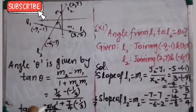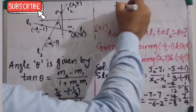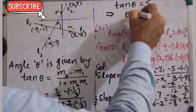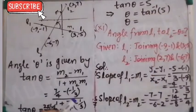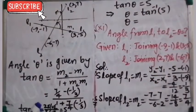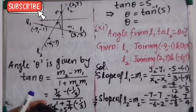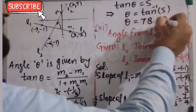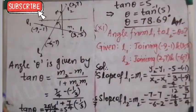We have tan θ = 5. Taking the inverse, θ = arctan(5). Evaluating through a calculator gives us 78.69 degrees. So the angle from L1 to L2 is 78.69°.